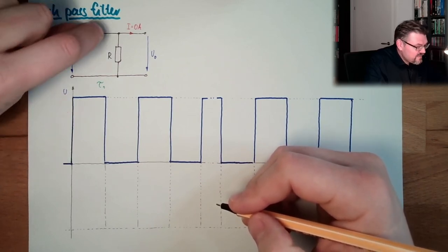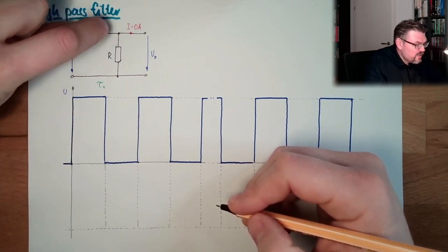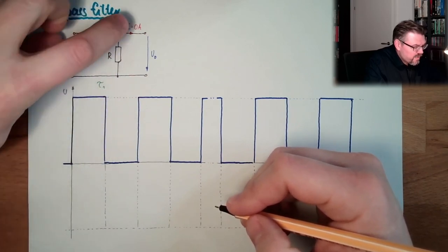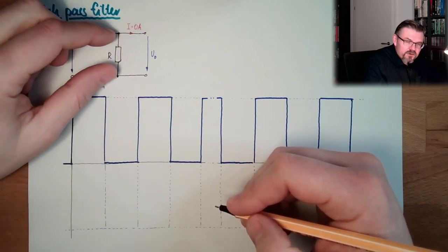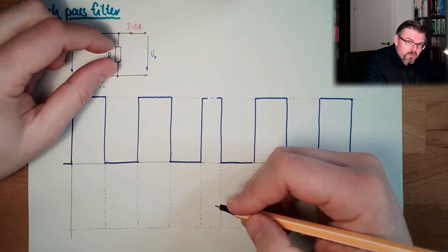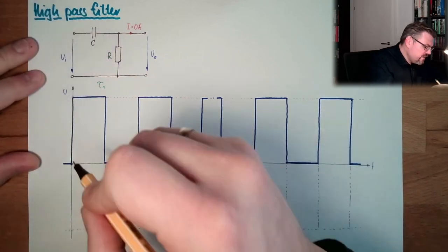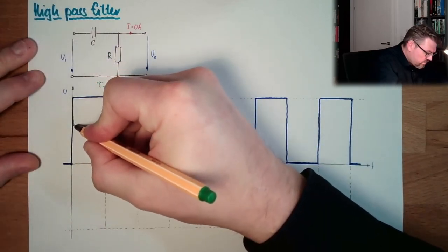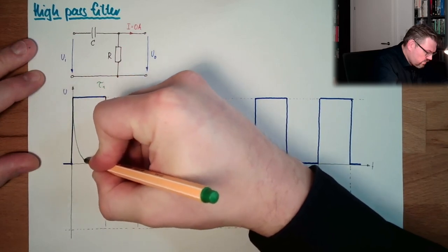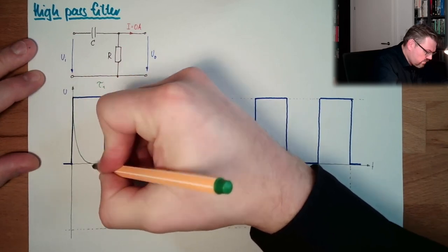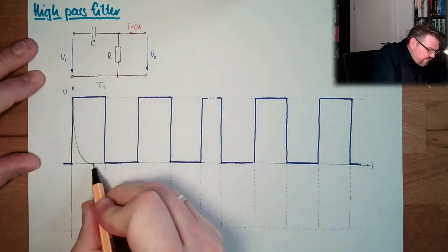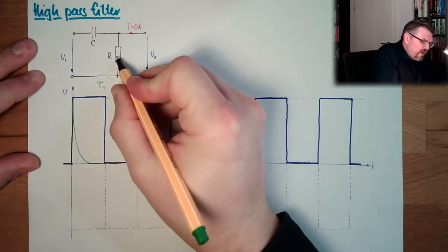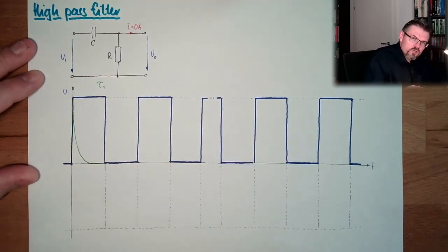Then C is charged, so this voltage at C is getting bigger and bigger. So the voltage at R is dropping, dropping, dropping — and it looks like that. At some point in time, the capacitor is fully charged and R has no voltage left.